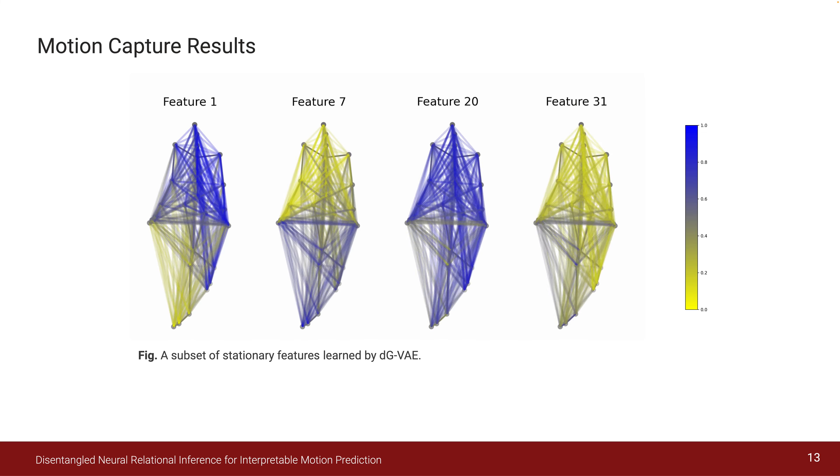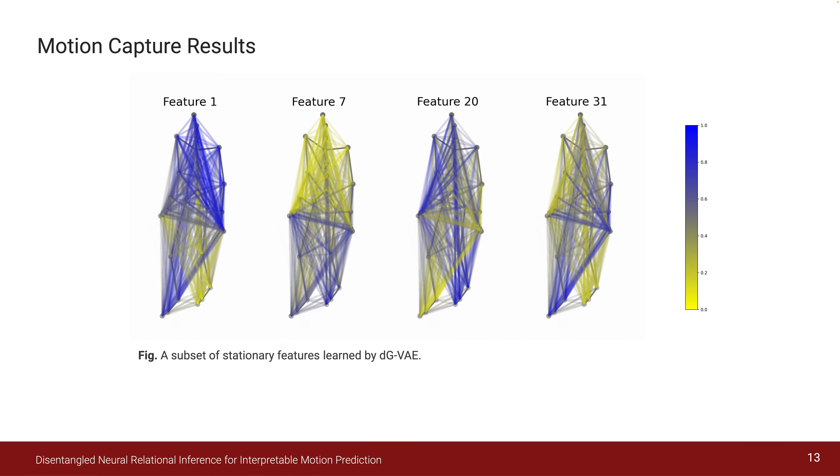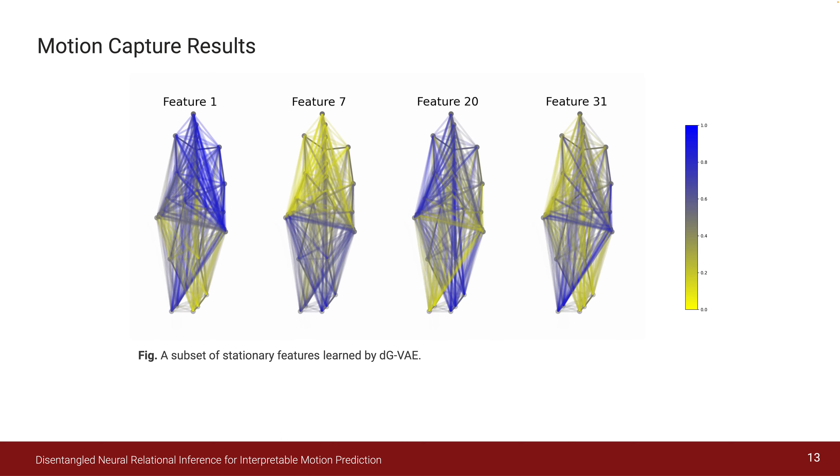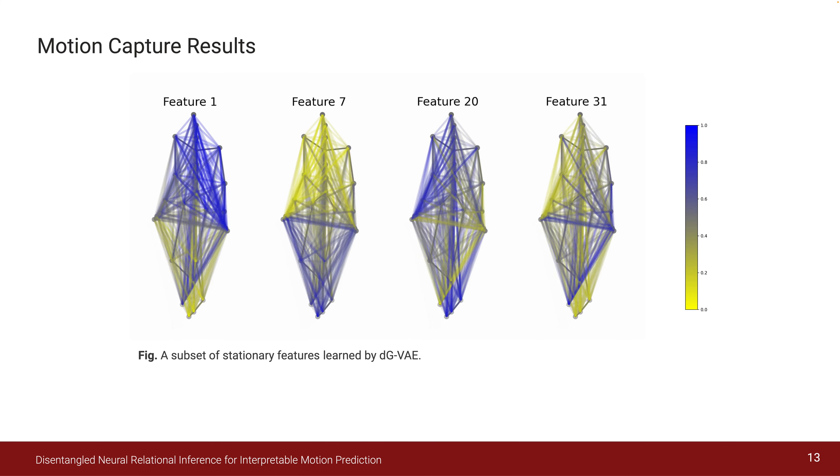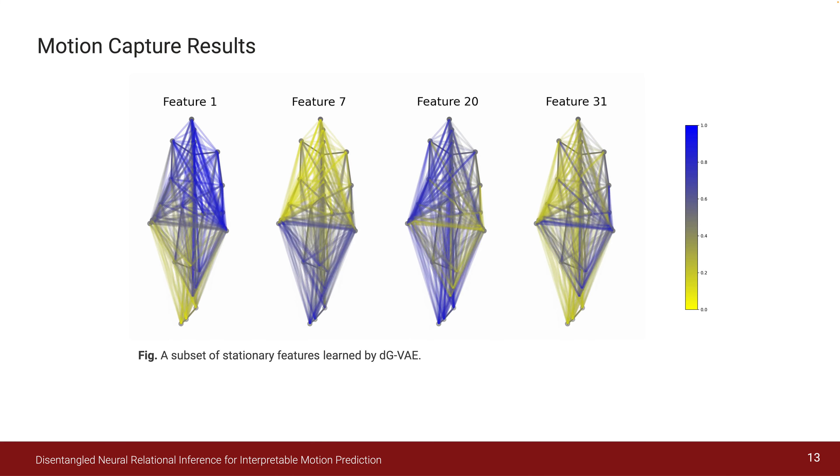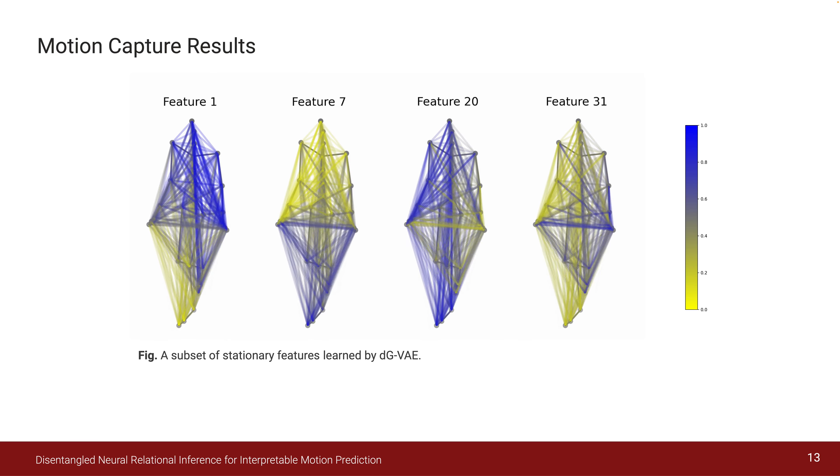These are examples of some learned features. You might notice how features 1 and 7 are static—the edges remain the same color or hue over time—while features 20 and 31 are dynamic. Overall, the learned dynamic features seem to correlate with relatively distinct relations.